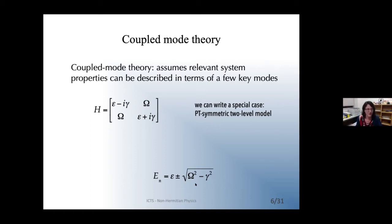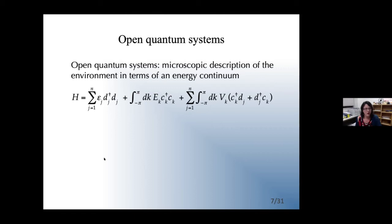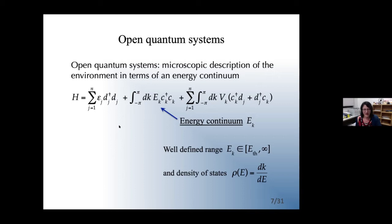But that's not where we're going. Instead we focus on open quantum systems, which provide a microscopic description of the environment via an energy continuum. The Hamiltonian has a discrete part interacting with the environment, plus a coupling term. The energy continuum E_k has a well-defined range, extending from some lower threshold up to infinity.